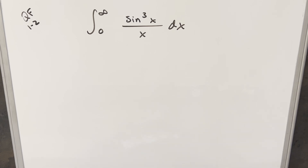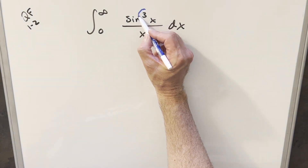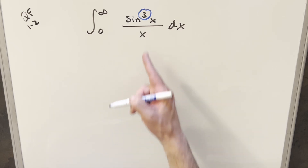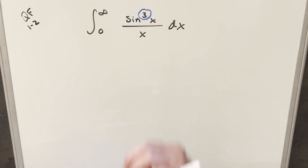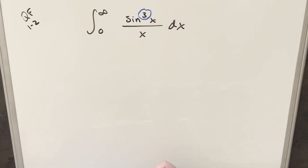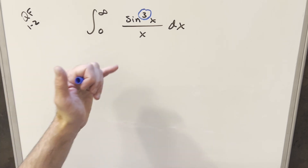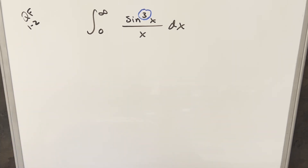I thought this one was interesting — it's really similar to one I did previously where we did sine x over x, but here we've got the cube on there. This also looks similar to another problem where you have sine cubed x over x cubed, though I think that one's a bit more complicated. For this, I was wondering: can I just do basically the same exact thing I did for sine x over x, which was use Feynman's trick on it?